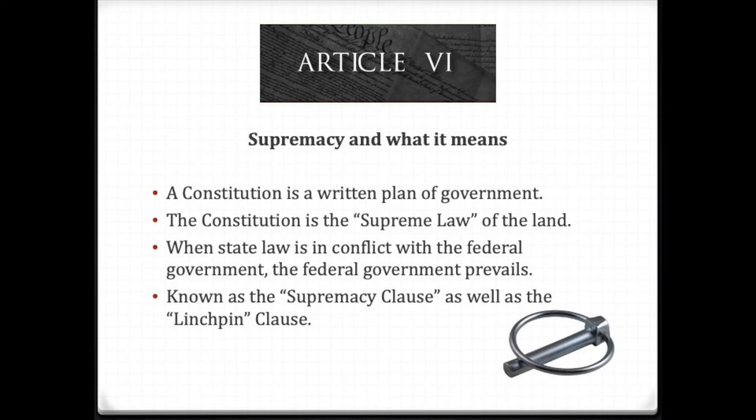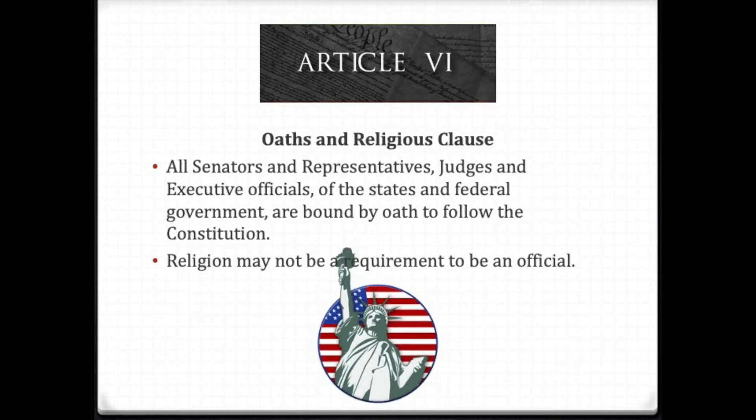The prioritizing of federal over state powers is known as the doctrine of preemption. Article 6 also provides that both federal and state officials, including legislatures and judges, must obey the U.S. Constitution. And to ensure the freedom of religion, this article ensures that no public official be required to practice or pledge allegiance to any particular religion.